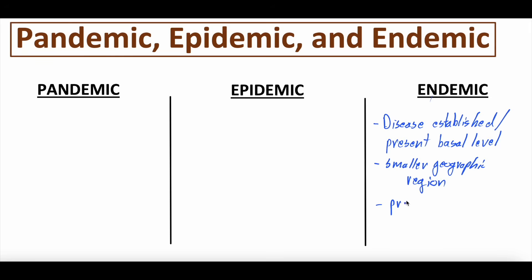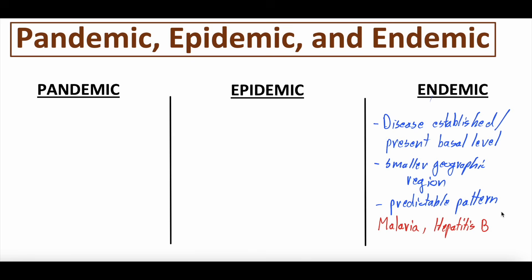An endemic disease often follows a somewhat predictable pattern — case counts and spread tend to follow a more predictable path. Examples of endemic diseases include malaria, which is endemic to certain areas, and hepatitis B, which may be more familiar to people in the U.S. and is endemic to some regions. This term is often used for infectious diseases, but it can describe non-infectious diseases as well. Essentially, endemic means a local, basal presence that spreads but not too robustly, and is often predictable.